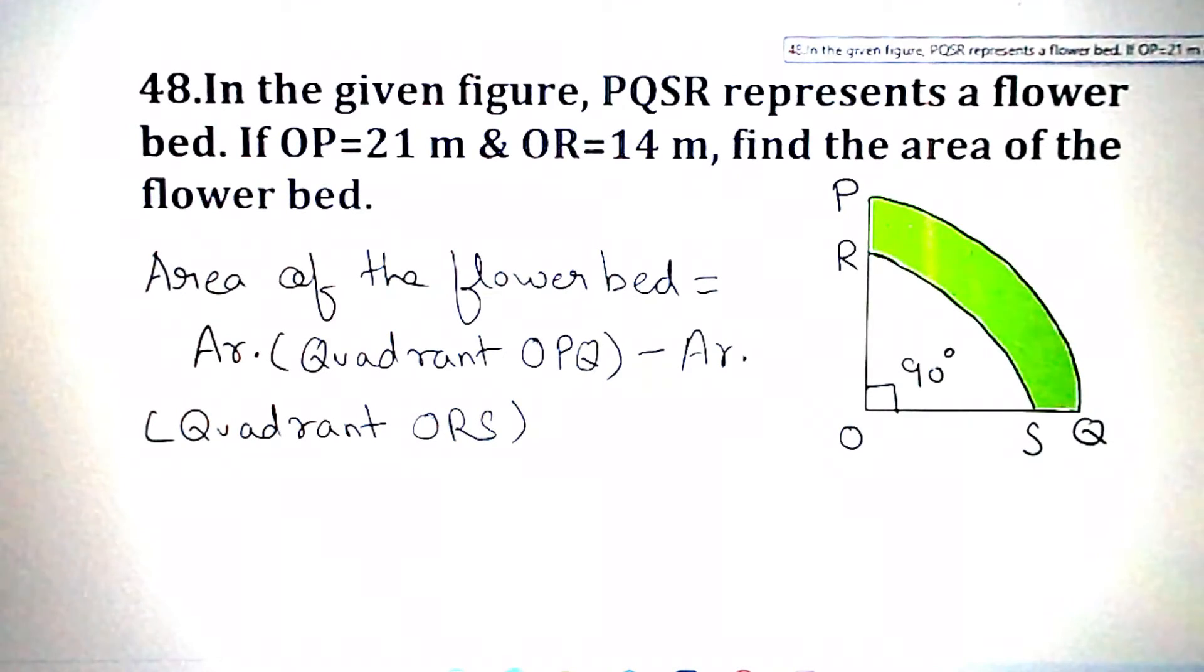Question number 48: In the given figure, PQSR represents a flower bed. If OP is equal to 21 meter and OR is equal to 14 meter, find the area of the flower bed.